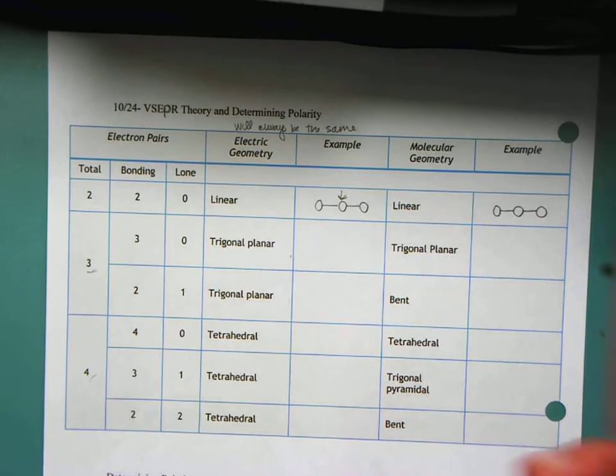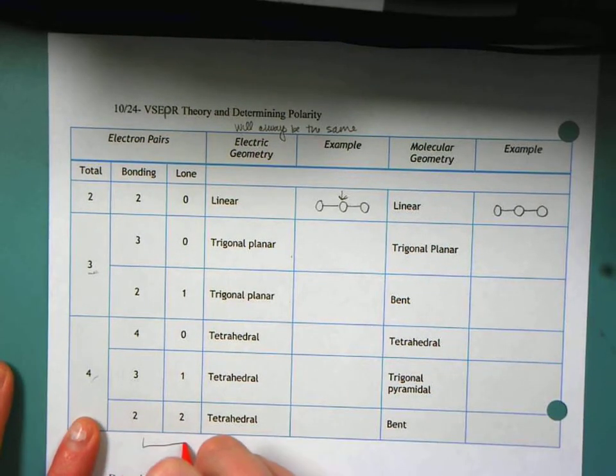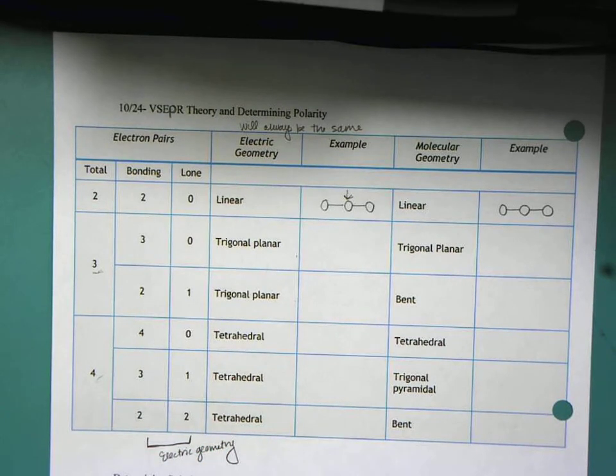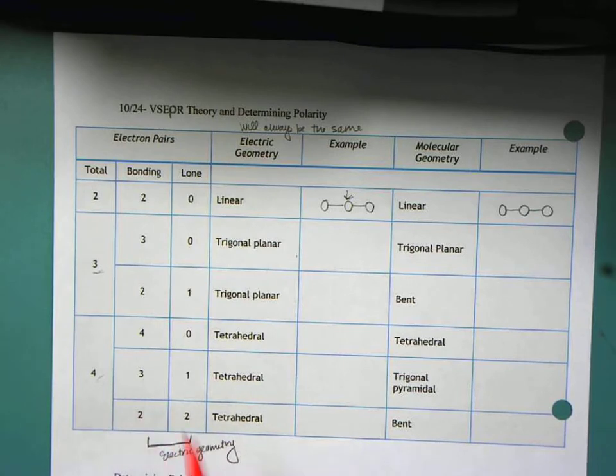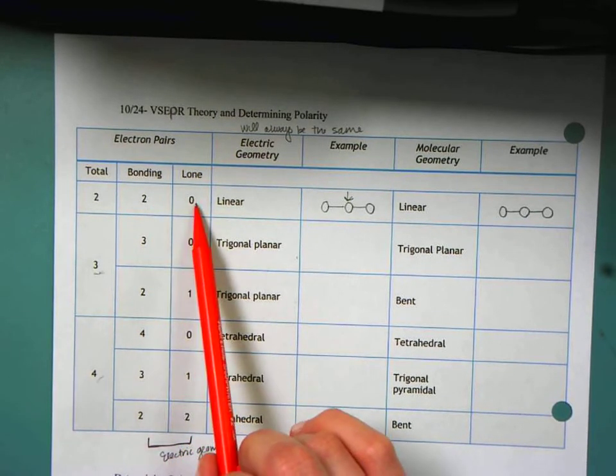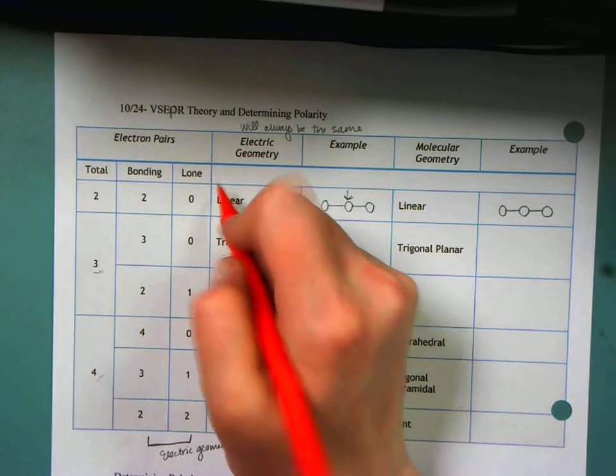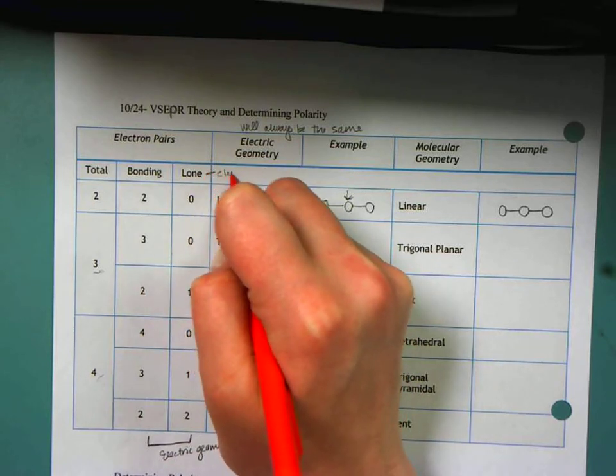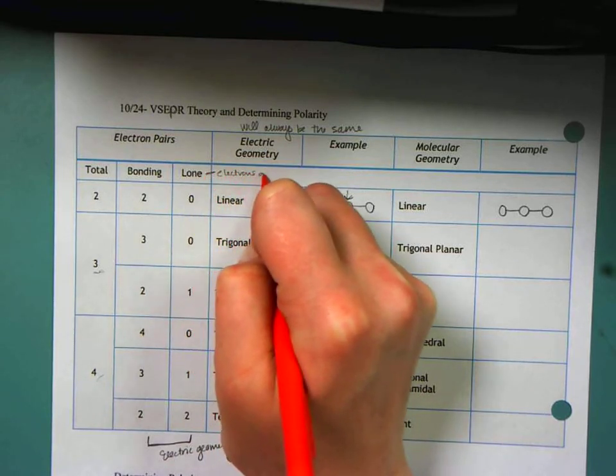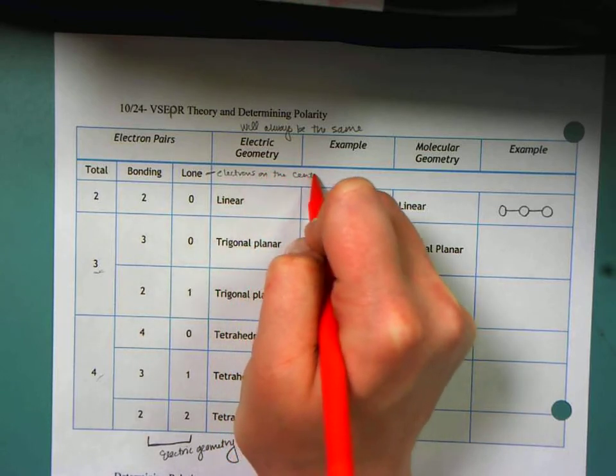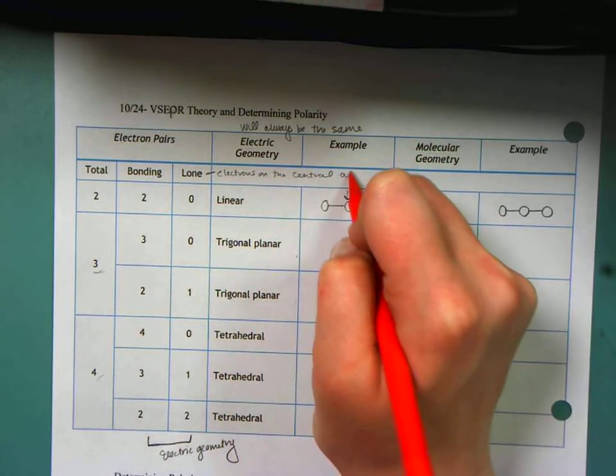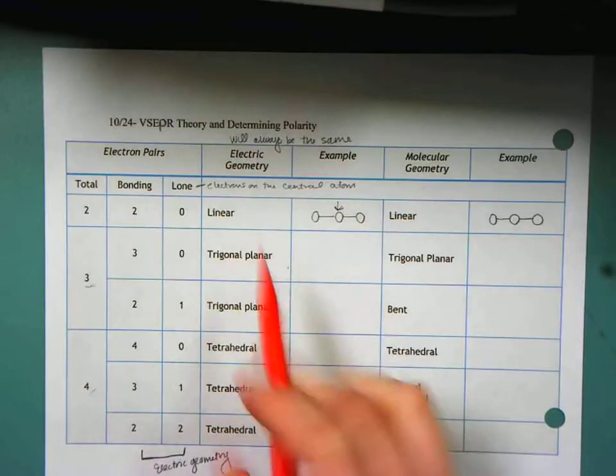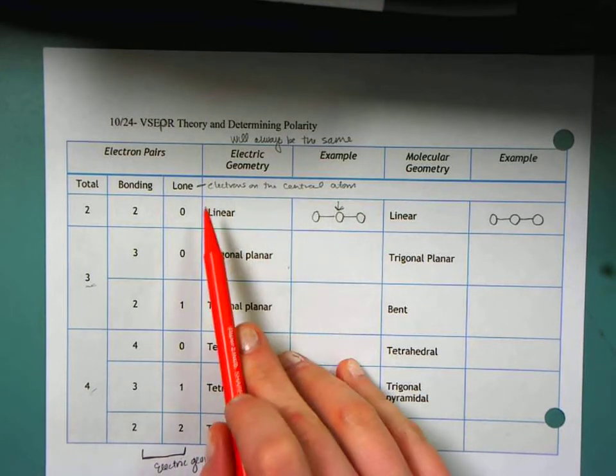Molecular geometry is going to depend on this. So my electric geometry will depend on this idea of what is a bonding pair and what is a lone pair. By lone electrons, I mean just electrons on the central atom. So I'm looking at electrons on my central atom for the lone pair.